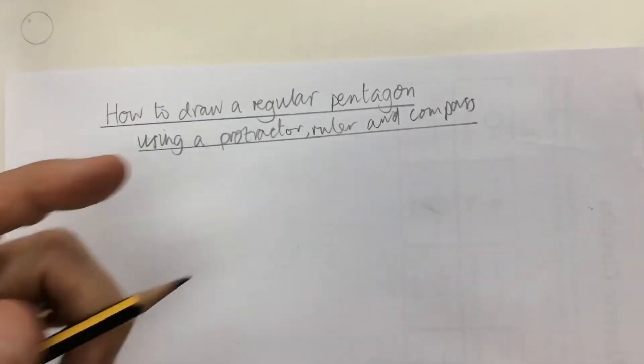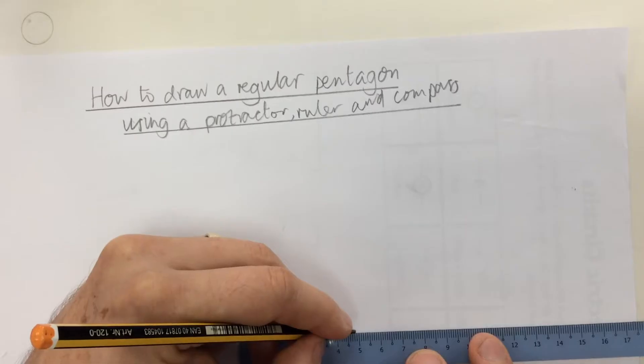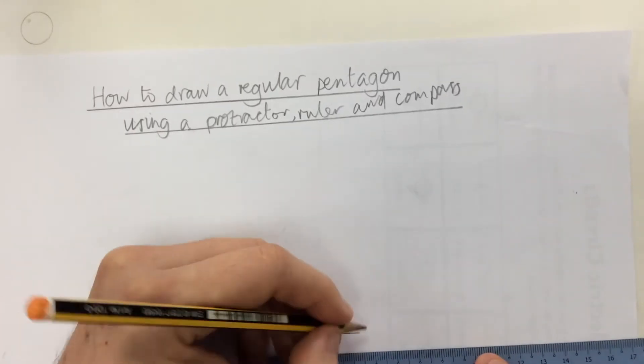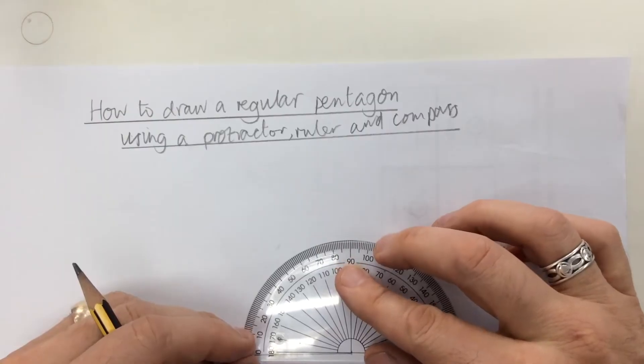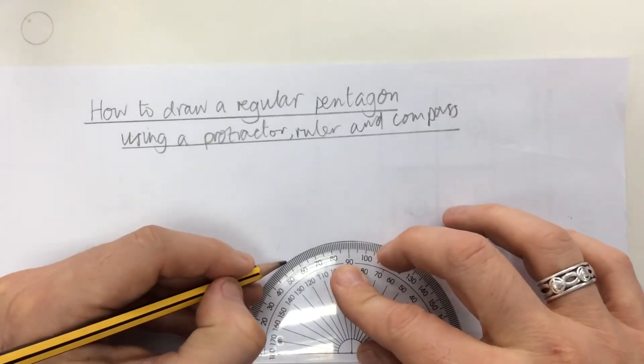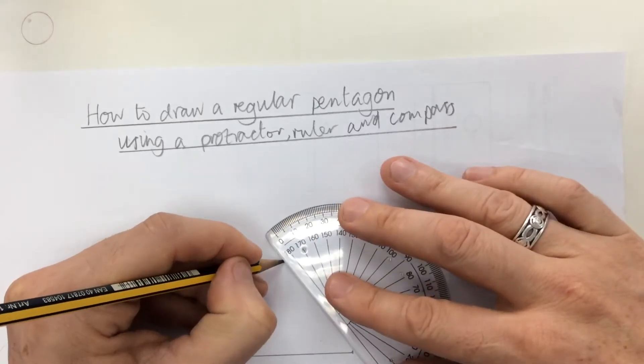So first of all I'm going to draw a 5cm line. And on both ends of that line I'm going to mark on a 54 degree angle. And it's 54 degrees because that's half of the internal angle of a pentagon, of a regular pentagon.